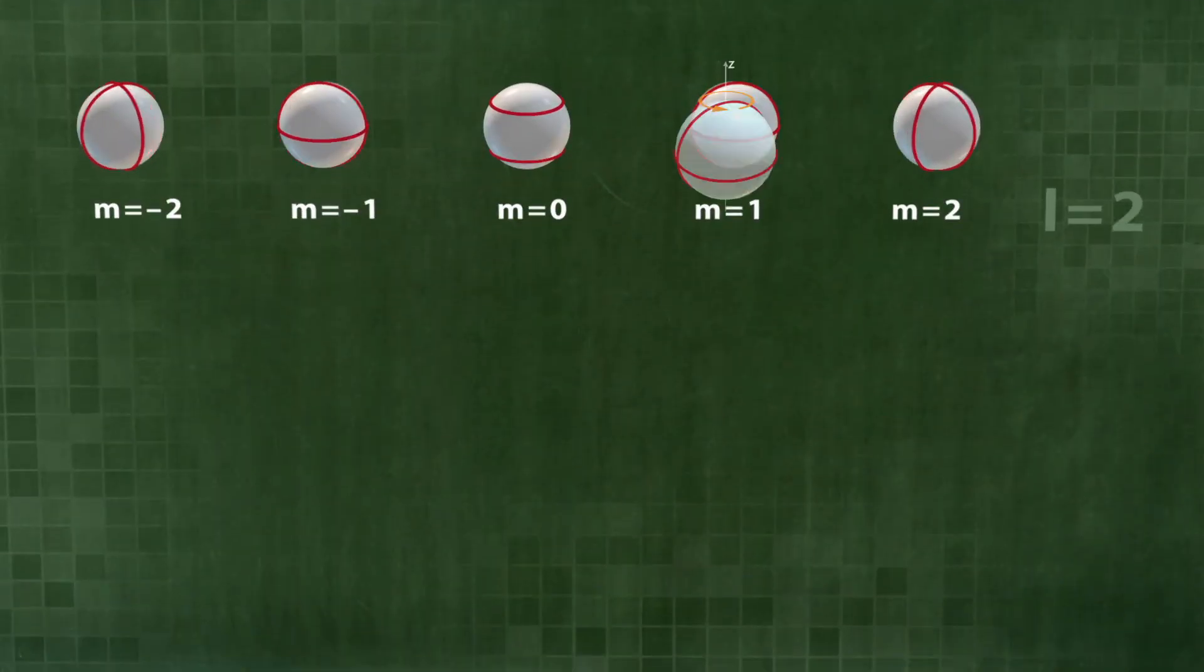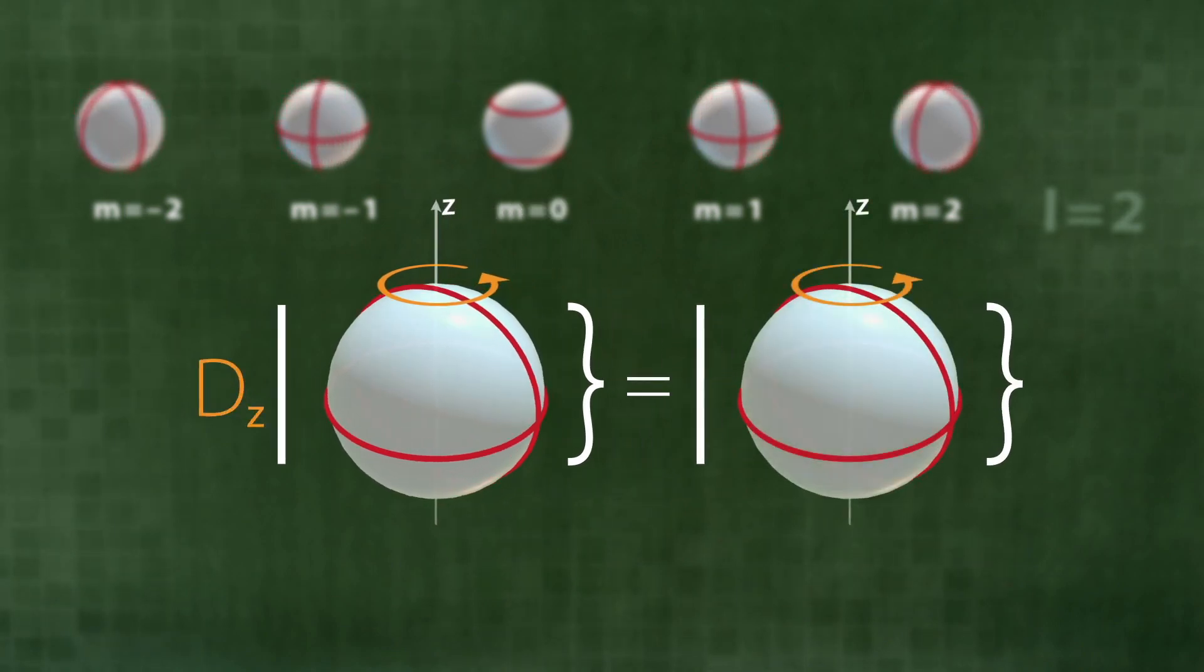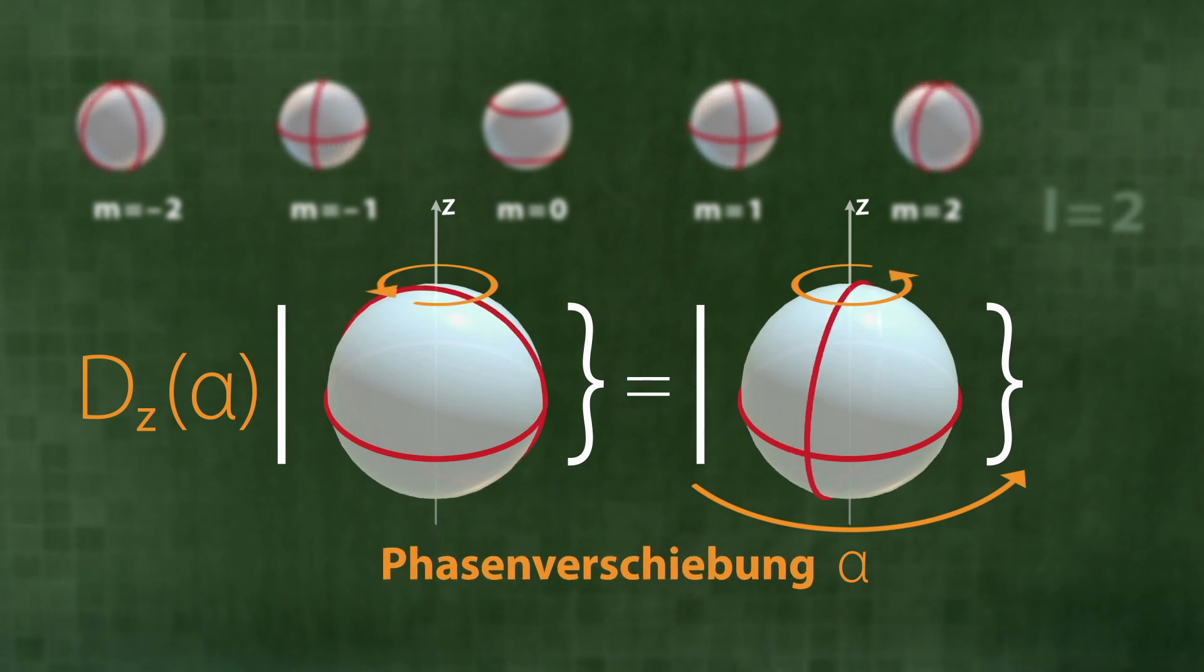Is this also true for M equals 1? This state is rotating about the z-axis. Rotating it additionally by a fixed angle alpha therefore only changes the phase of its rotation. It does not change the state itself.